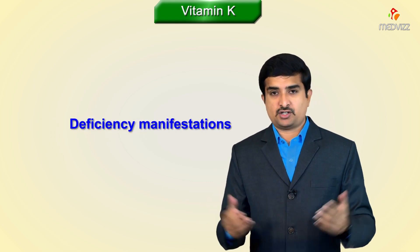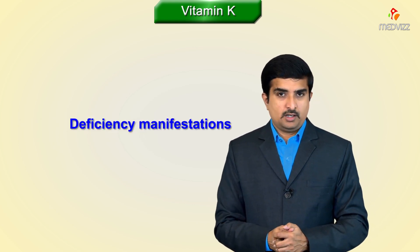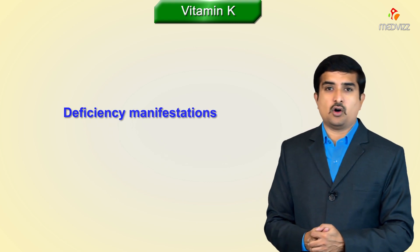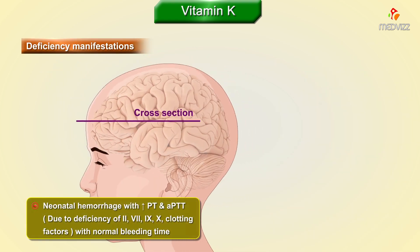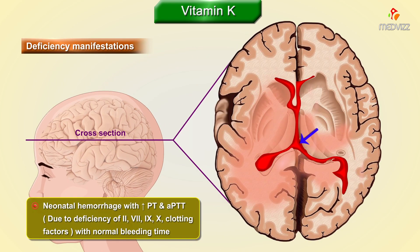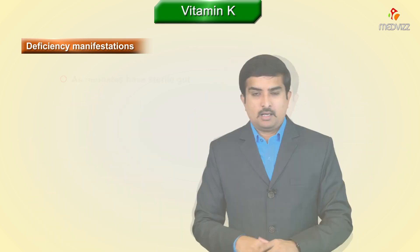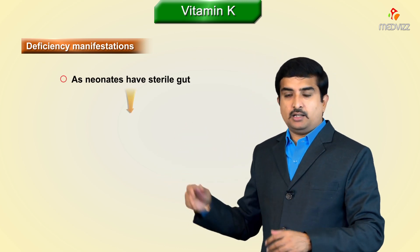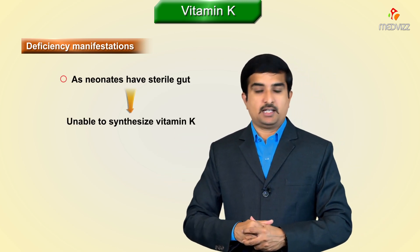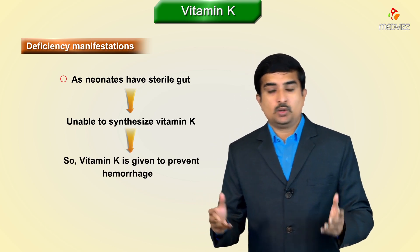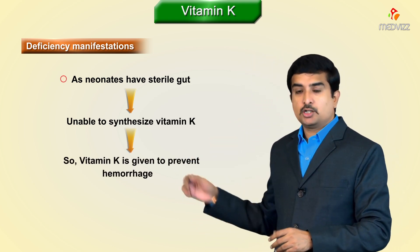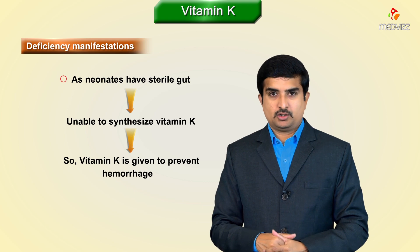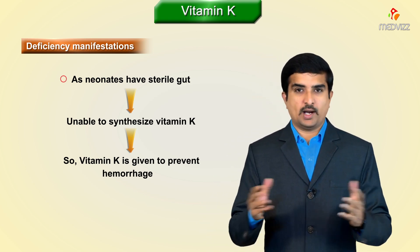Vitamin K deficiency can cause neonatal hemorrhage with an increase in PT as well as PTT, due to deficiency of clotting factors 2, 7, 9, and 10, but with a normal bleeding time. Since neonates have a sterile gut, they are unable to synthesize vitamin K. Therefore, vitamin K is given prophylactically to neonates to prevent hemorrhage.